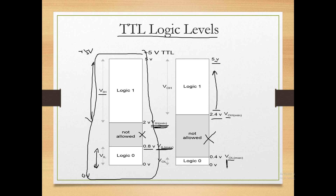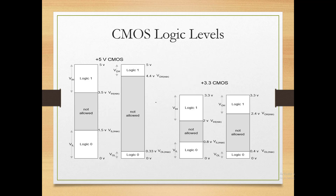If the voltage drops below 2.4V, the IC won't remain in high state. Similarly for 0 to 0.4V, the IC can handle noise within this range. TTL can manage up to this range — if noise exceeds this, the IC will be neither at logic 0 nor logic 1. So for input levels, we always try to avoid the 'not allowed' range.